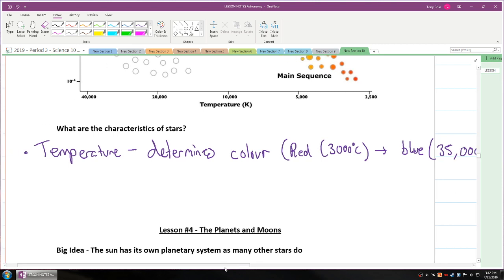We have spectral lines. Spectral lines tell us what chemicals are in this star. Determines composition of star.